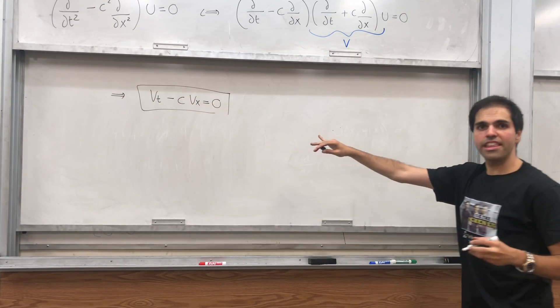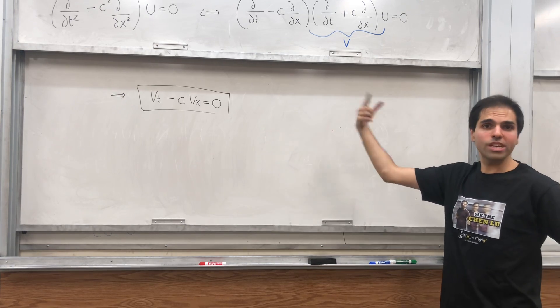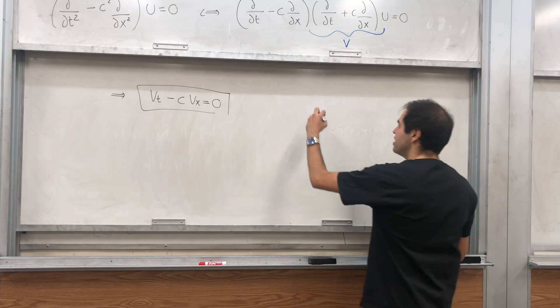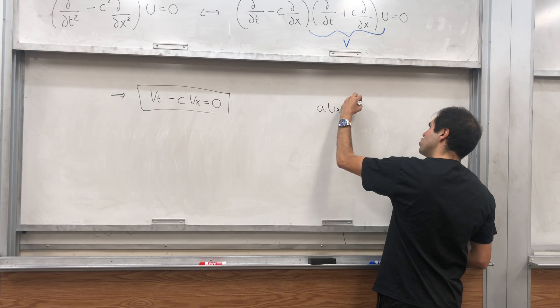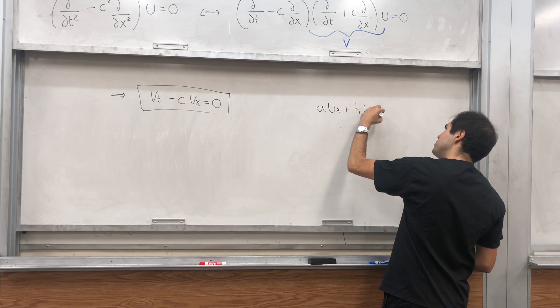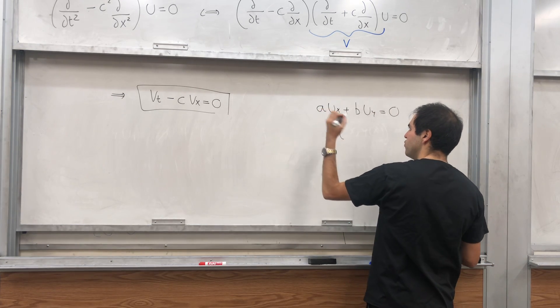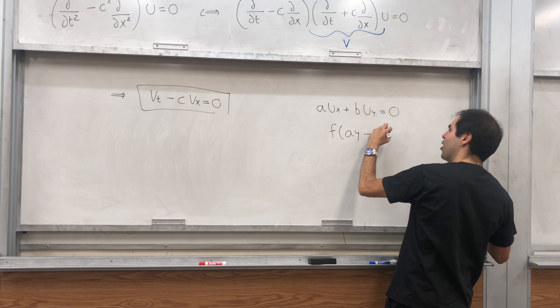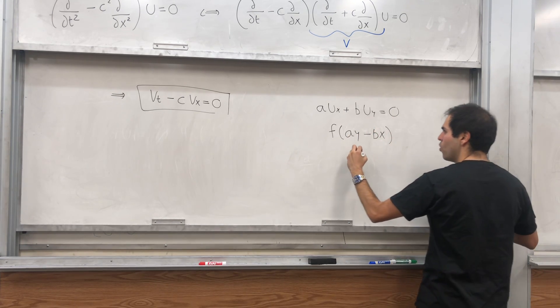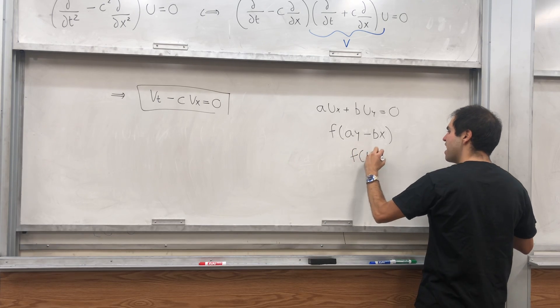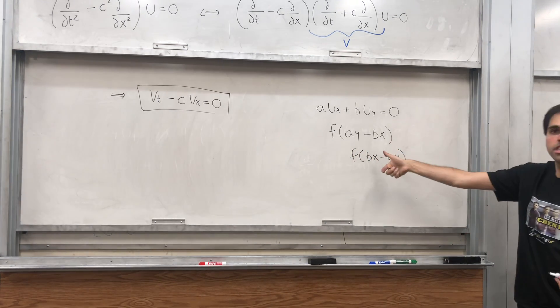But that's a great thing because you see this is a first order PDE which we can actually solve, at least based on the previous videos. And I would like to remind you that the solution of a u_x plus b u_y equals zero is just f of ay minus bx, or you can also write it as f of bx minus ay.